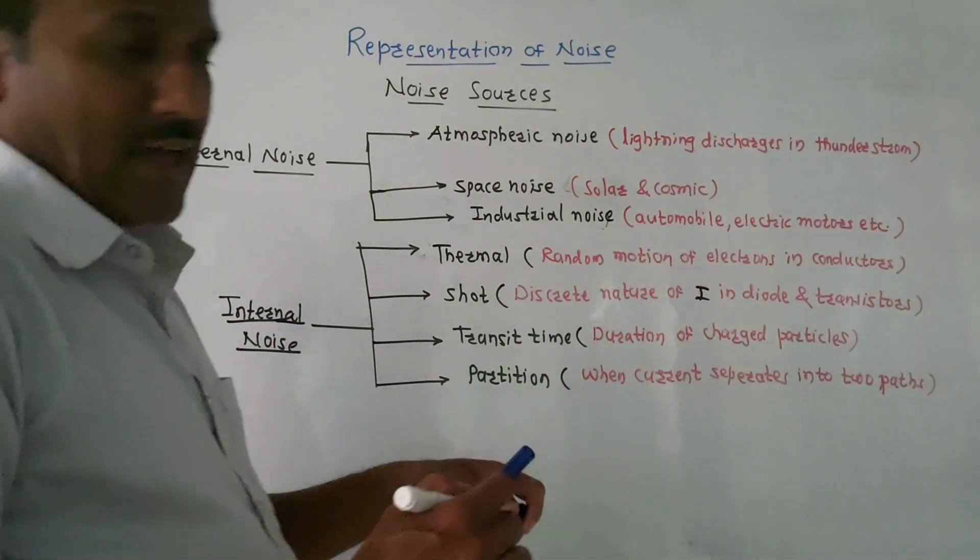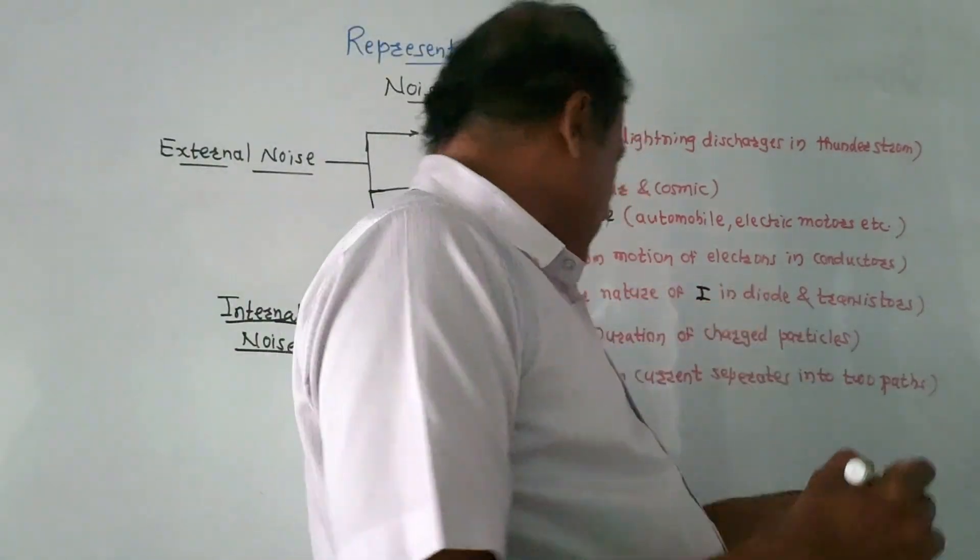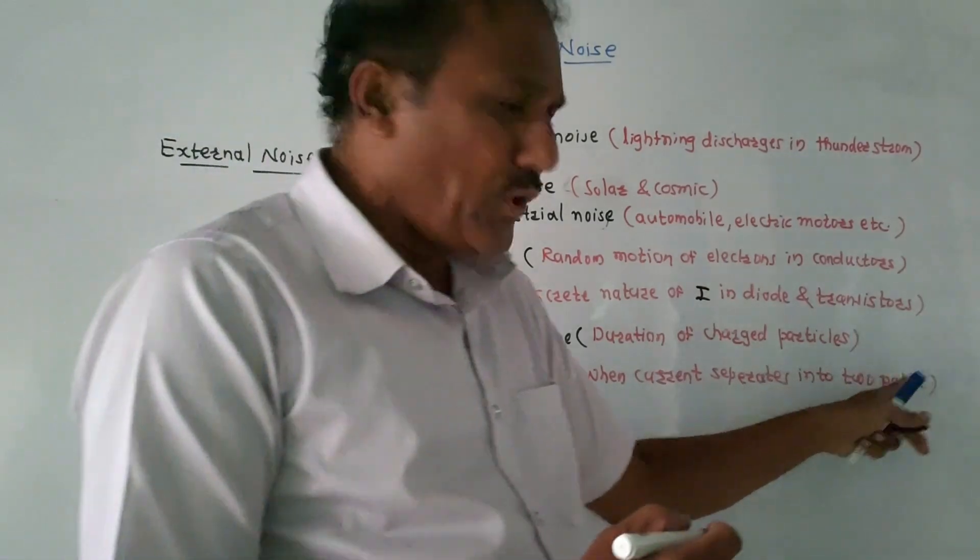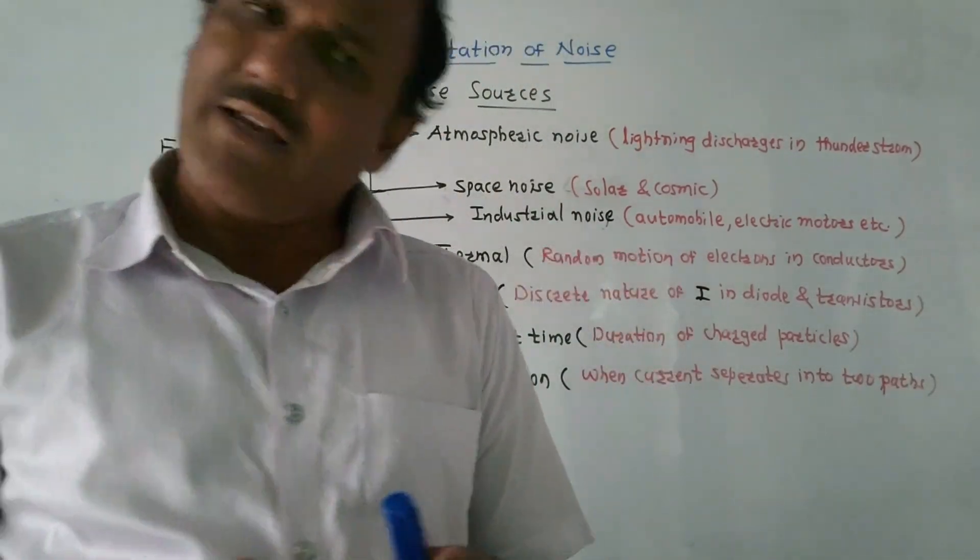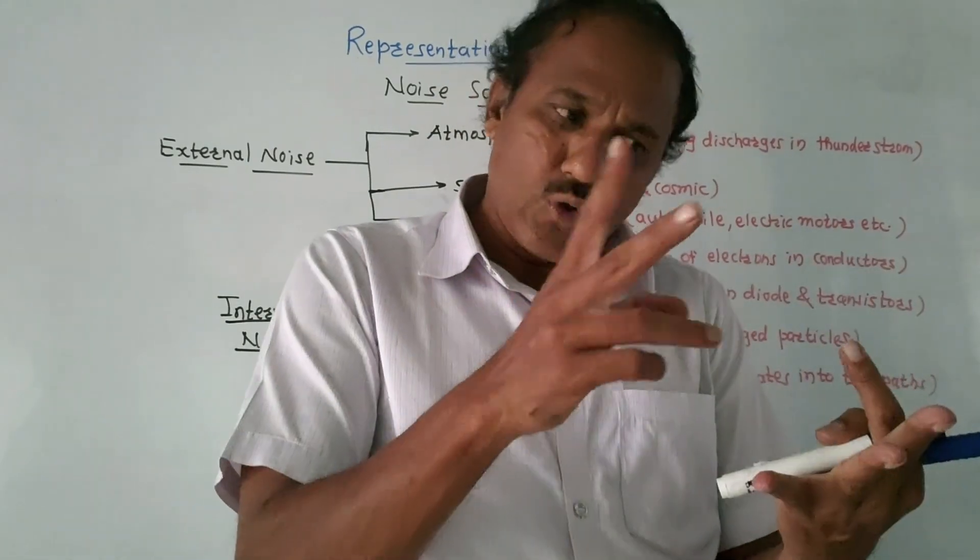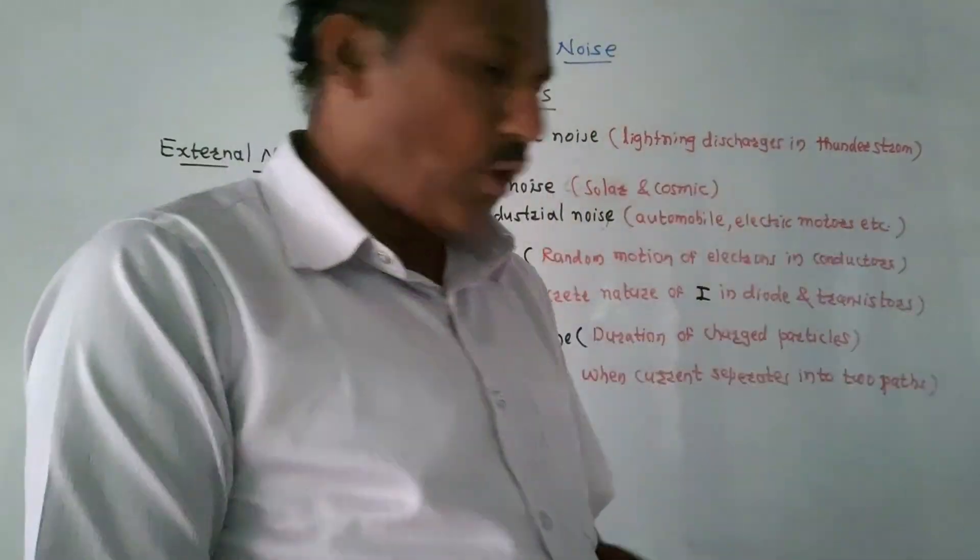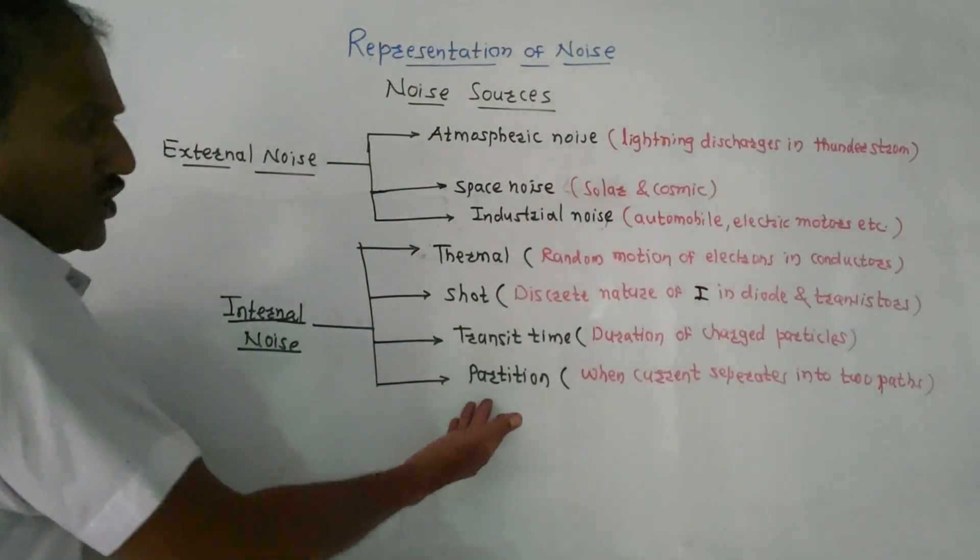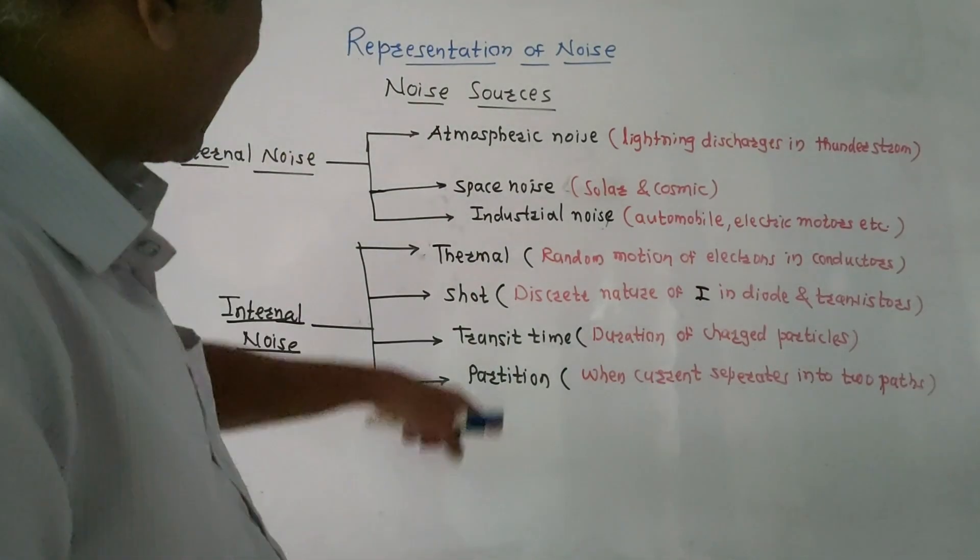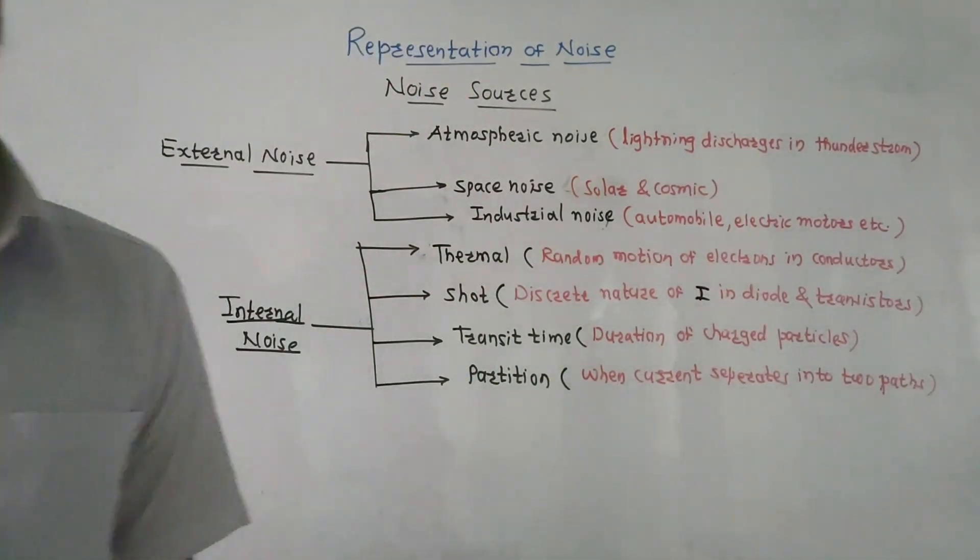And last type of internal noise is partition noise. This is arising due to current getting separated into two parts. In transistor, emitter current is getting divided into collector current and base current, so in this case some type of noise is generated - that is partition noise. Apart from this, there are some miscellaneous types of noise, but these are the major noise sources.